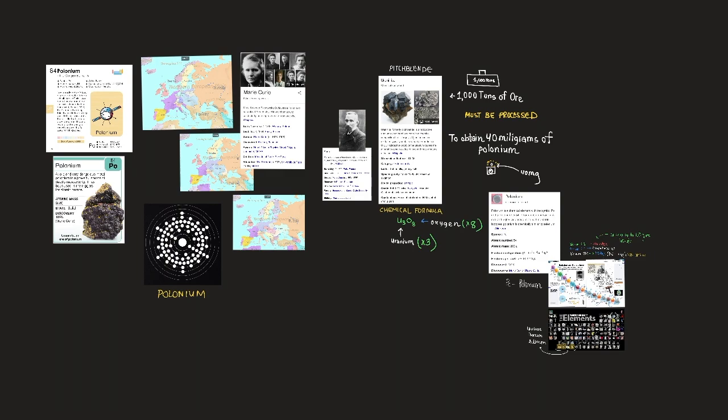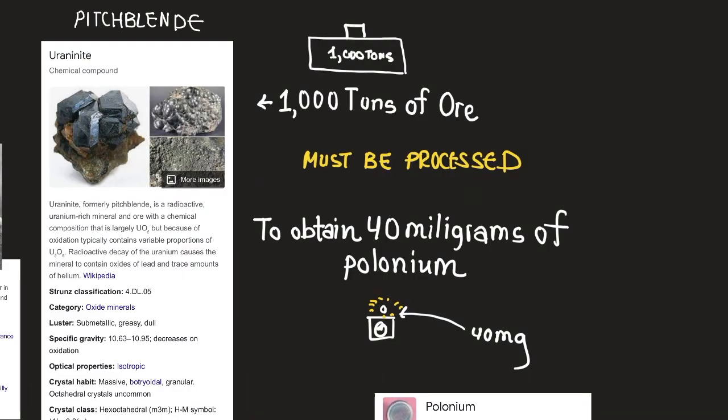The discovery was announced in July 1898. Polonium is extremely rare. Even in pitchblend, 1,000 tons of the ore must be processed to obtain 40 milligrams of polonium. Its abundance in the Earth's crust is about 1 part in 10 to the power of 15.